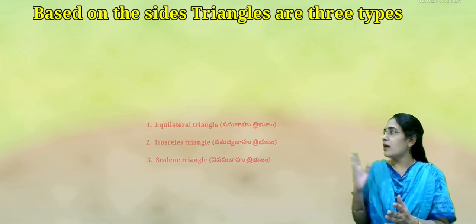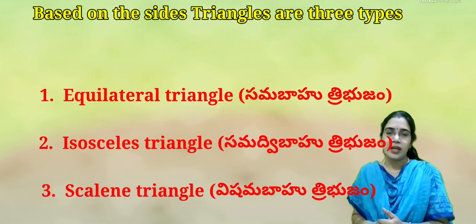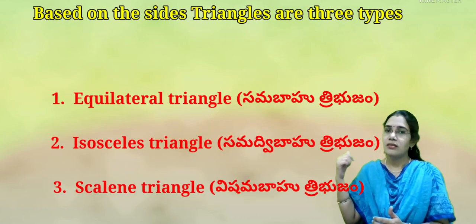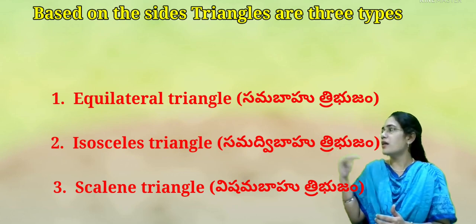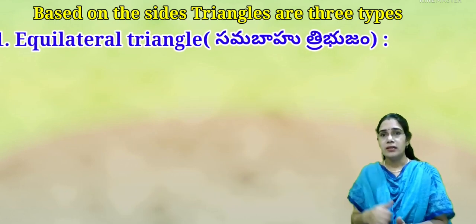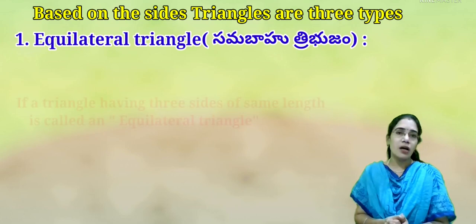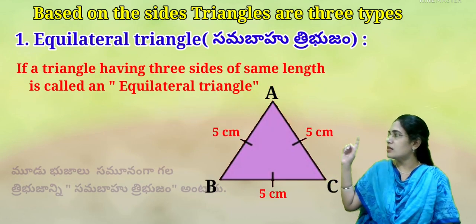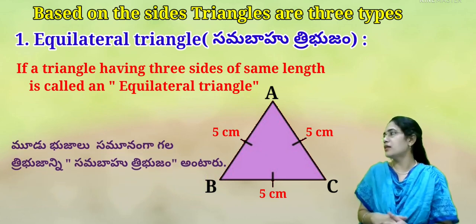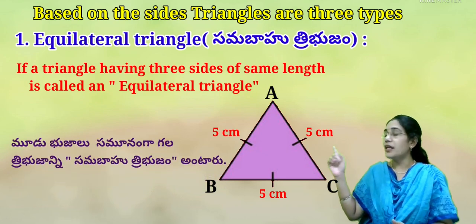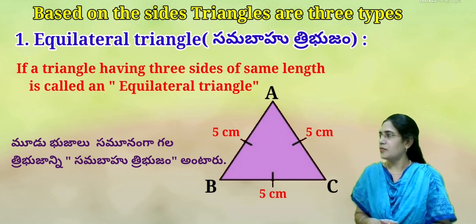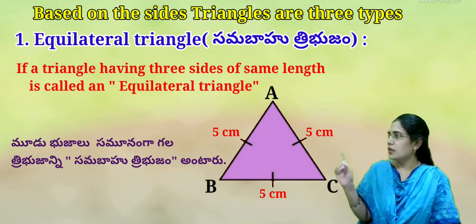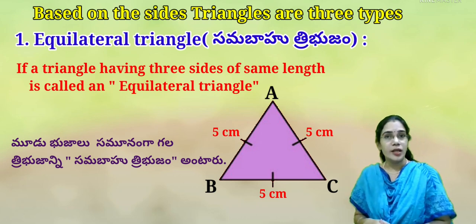Based on the sides, triangles are three types: equilateral triangle, isosceles triangle, and scalene triangle. An equilateral triangle (Samabahu Thribujam) is a triangle having three sides of the same length. Here, AB, BC, and CA are three equal sides.